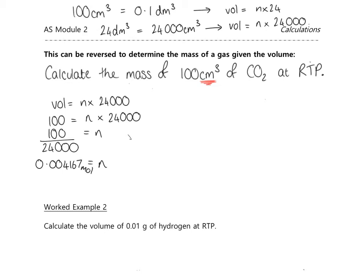Now that I have the number of moles of CO₂, I can work out the mass using mass = n × RFM. Keep the value in your calculator for accuracy. Number of moles is 0.004167, and the RFM of CO₂ is 44, so mass = 0.004167 × 44 = 0.183 g.